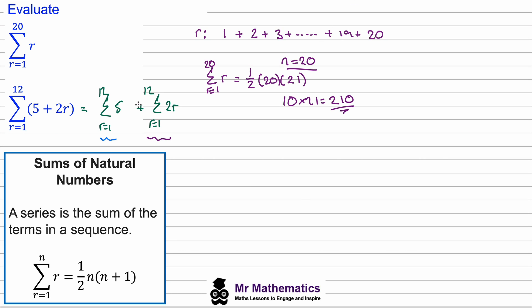So if we look at the first one, the sum between r equals 1 to 12 of 5, well when r equals 1 the term will be 5, when r equals 2 again we'll have 5. So what we've got here is 12 lots of 5, and we can calculate this very simply as 12 lots of 5, which is 60.